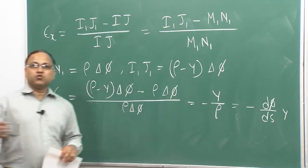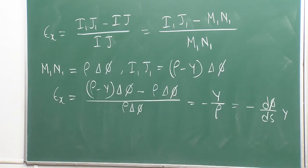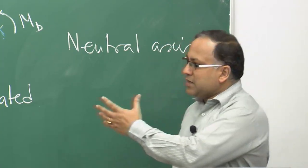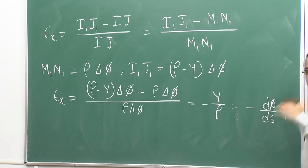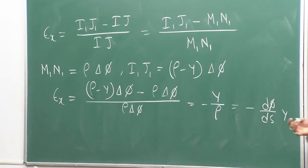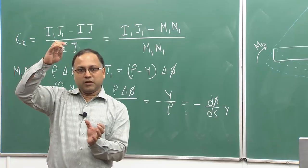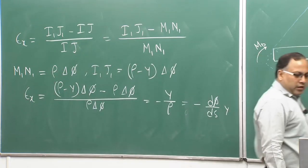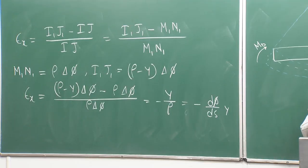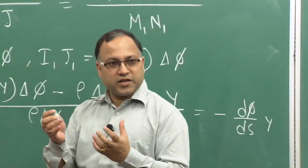This is the very important relation: epsilon_x equals minus y/rho. Why is the minus sign there? Because it indicates shortening above the neutral axis. If you go below the neutral axis you get a plus sign, meaning elongation is happening. So the neutral axis is the boundary between the elongated fibers and the shortened fibers. Each fiber in the beam will experience some elongation or contraction depending on its position with respect to the neutral axis.